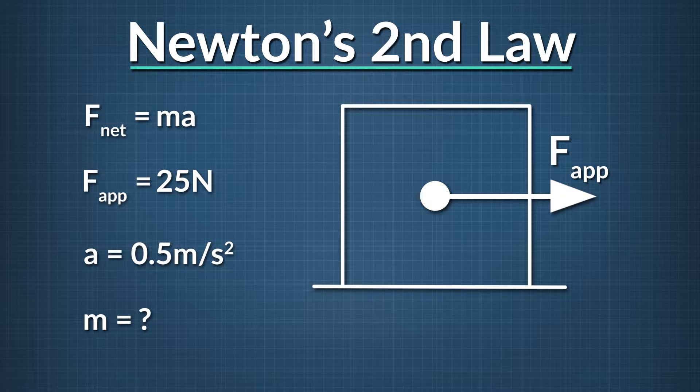Assuming the floor is frictionless, your push, which is an applied force, is the only horizontal force acting on the box. By Newton's second law, the strength of this push in Newtons equals the box's mass in kilograms times its acceleration in meters per second squared.